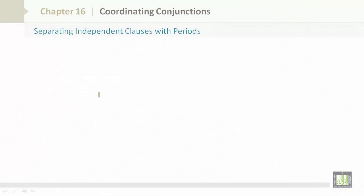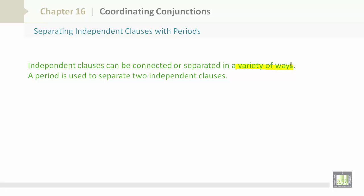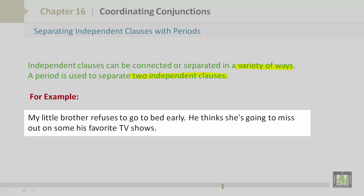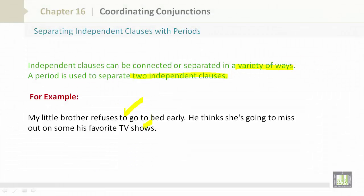Separating independent clauses with periods. Independent clauses can be connected or separated in a variety of ways. A period is used to separate two independent clauses. For example: My little brother refuses to go to bed early. He thinks he is going to miss out on some of his favorite TV shows. Another independent clause.